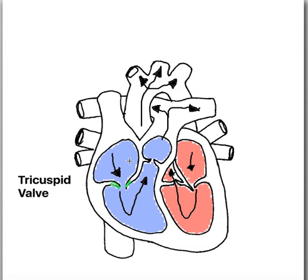When the atrium contracts — the right atrium contracts — what happens is that the valve opens to allow blood to flow down into the ventricle.